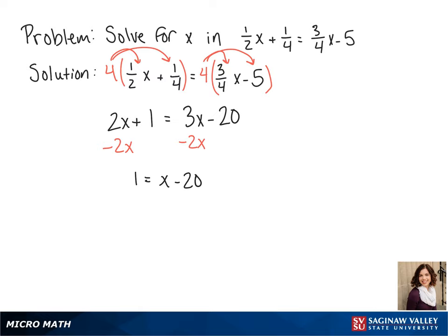To get x by itself, I just have to add 20 to both sides. And we get x equals 21.